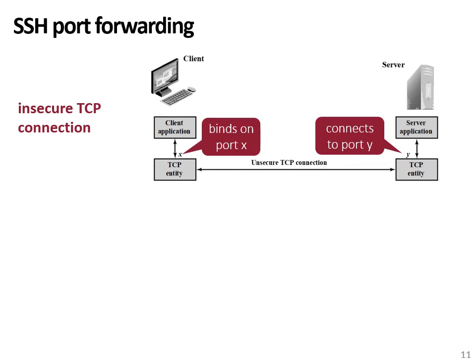SSH port forwarding is one of the most useful features of SSH. In essence, it provides the ability to convert an insecure TCP connection into a secure SSH connection — referred to as SSH tunneling. A port in this context refers to a TCP port, the identifier of a TCP connection on a local host. When using TCP in an insecure way, the client will bind on a local TCP port, for example port X, and transmit data over the network. The server listens on port Y and receives that data, as the client specifies the destination IP address and port.